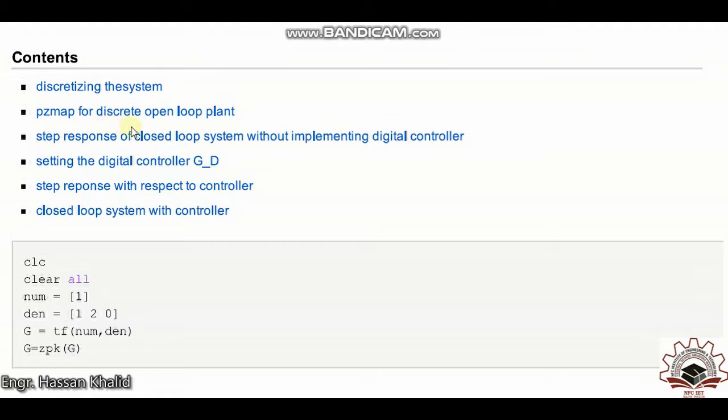Then we'll find the step response of our closed loop system without implementing the digital controller. After that, we will evaluate the digital controller G of D and then set the step response with respect to the controller.